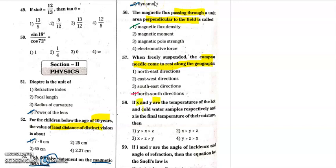Question 58: if X and Y are the temperatures of the hot body and cold body respectively, and Z is the final temperature of the mixture, then the relation — the hot body has temperature X — so X will be important for the body.